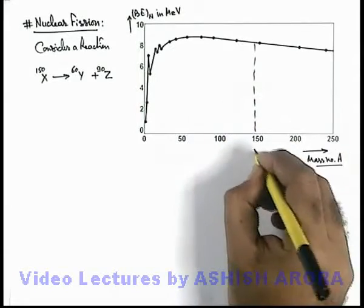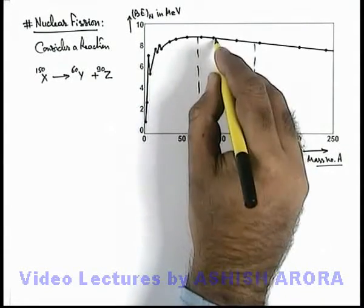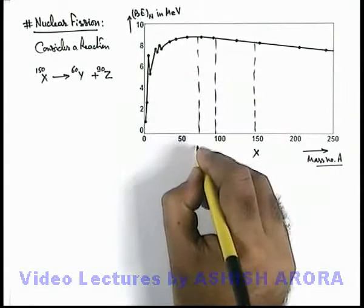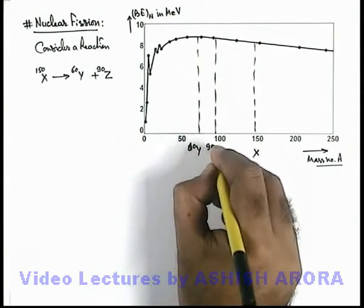Then obviously, as X is a relatively heavy element, it splits into 2 nuclei, one is Y and the other is Z. Y is 60 and Z is 90, X was 150.